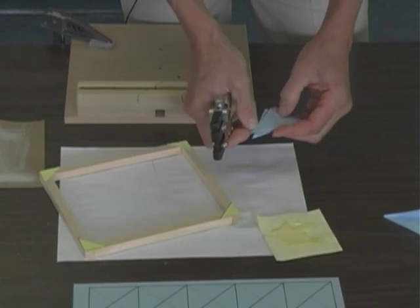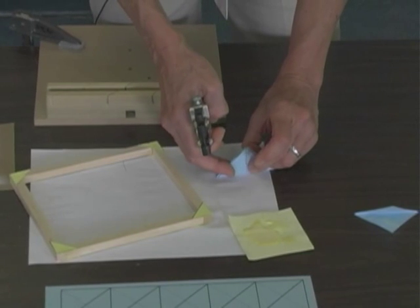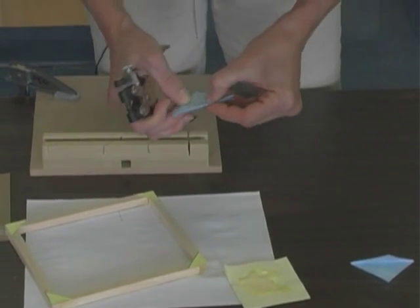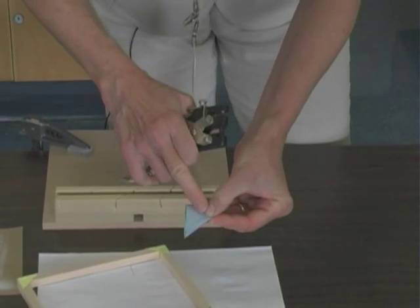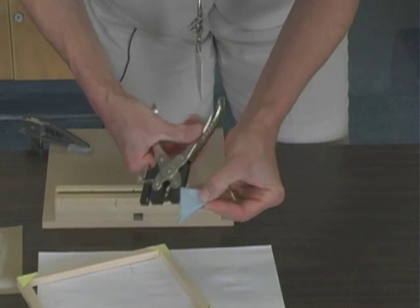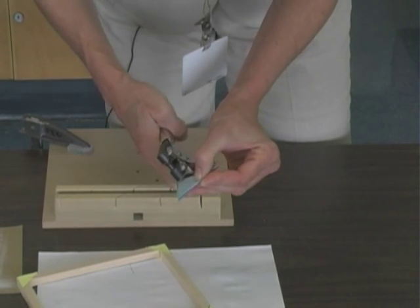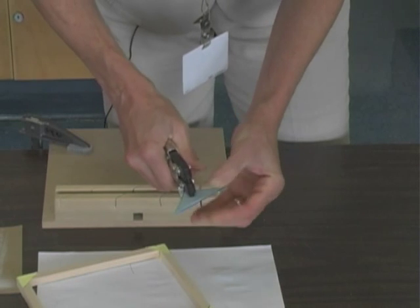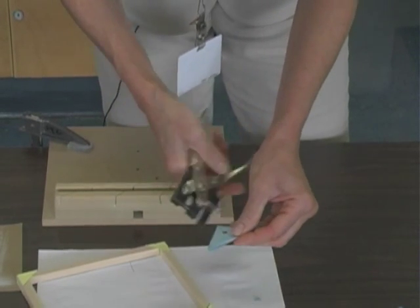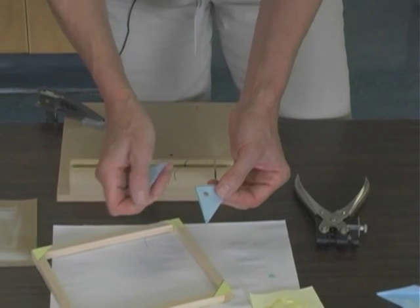You've taken both of your gussets, put them together so that the bottom edges are aligned, and then take your punch and right through that center strip that's marked on the gusset, punch a hole that goes through both. Now that hole will be where you end up putting your axles through.